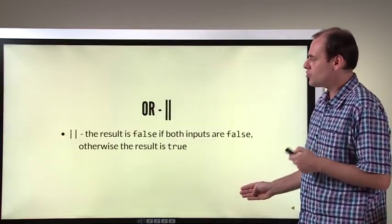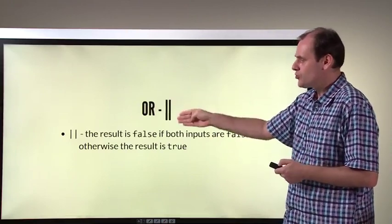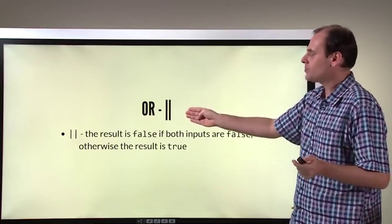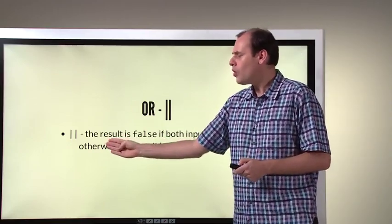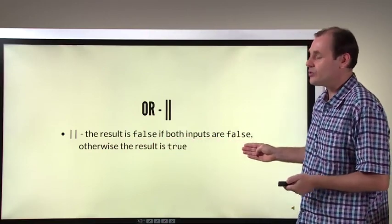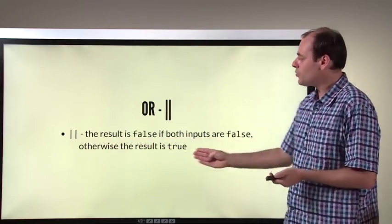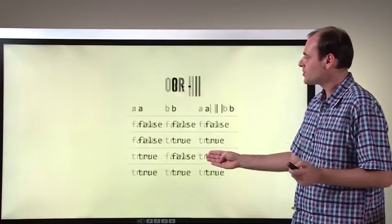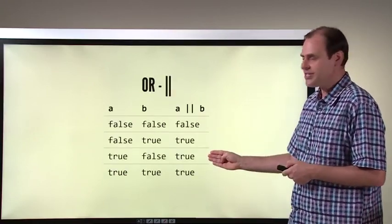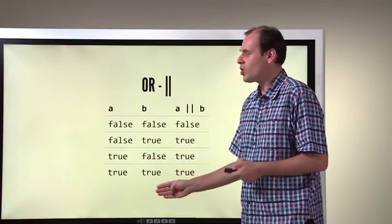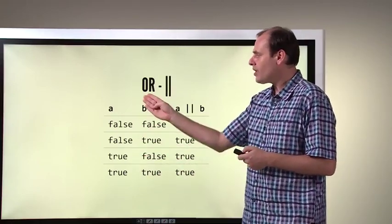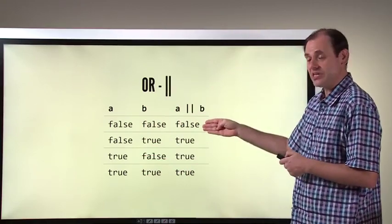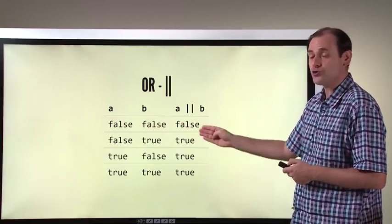Let's go on to logical OR. You type it as two vertical lines in JavaScript. Logical OR is different to logical AND. Logical OR: the result is false if both inputs are false; otherwise, the result is true. And you could summarize it in a truth table: if both inputs are false, the result is false; otherwise, the result is true.